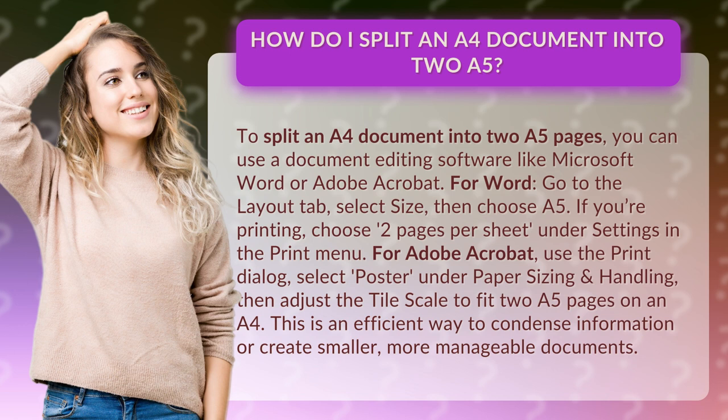For Word, go to the Layout tab, select Size, then choose A5. If you're printing, choose 'Two pages per sheet' under Settings in the Print menu.